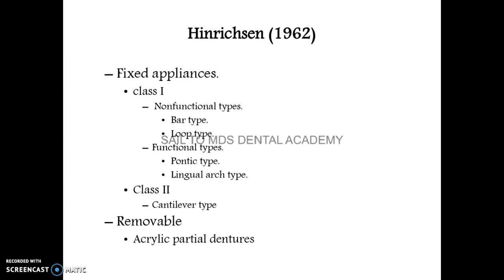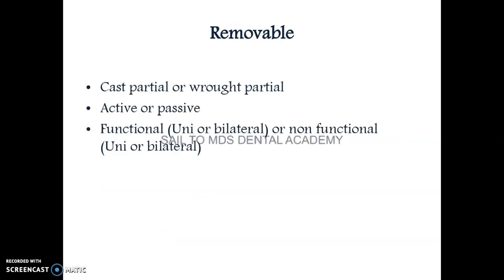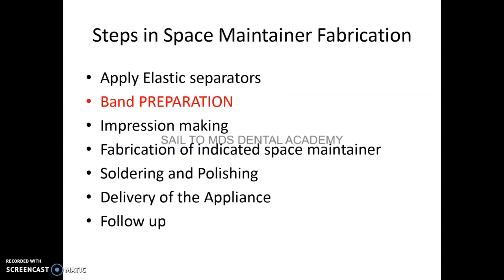According to Henry, they are fixed appliances and removable appliances — fixed being Class 1 and Class 2 — and also acrylic partial dentures. Examples of fixed space maintainers include mandibular lingual arch, palatal arch, and distal shoe appliance. Removable space maintainers can be cast partial or acrylic partial, active or passive, unilateral or bilateral, functional or non-functional.